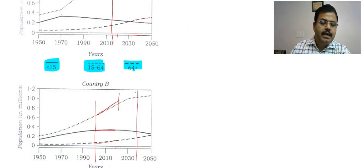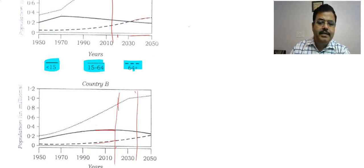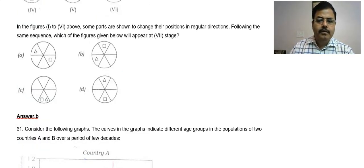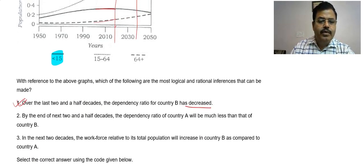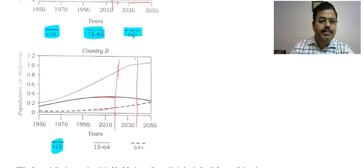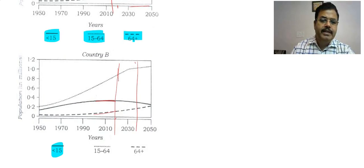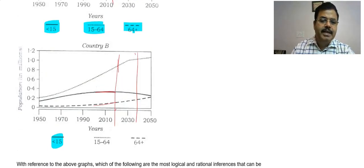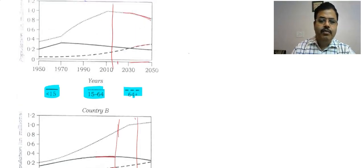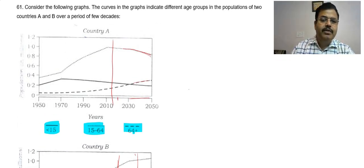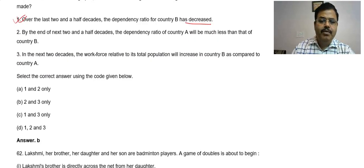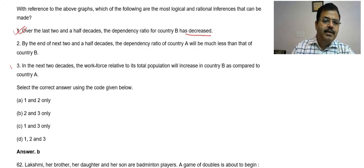So the next two decades would be from 2018 to 2038. In country B, the workforce is going to increase, and the population under 15 is going to slightly decrease, but that will be compensated by older people increasing. So workforce in B will increase. In country A, however, the workforce is going to decrease. Therefore, option C is correct because workforce in B will be more as compared to A.